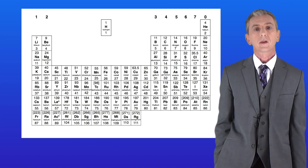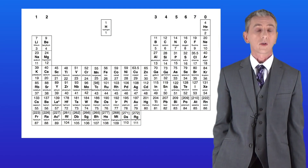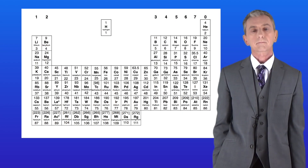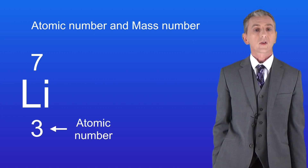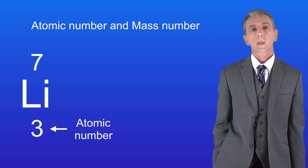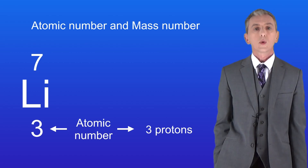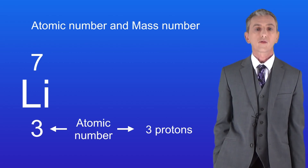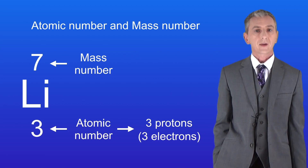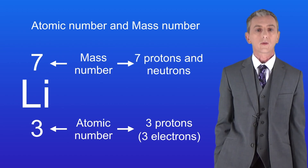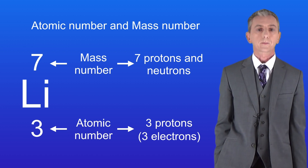The periodic table shows us the elements and we can use this to work out the numbers of protons, neutrons and electrons. You'll see that the symbol for each element has got two numbers. The smaller number is called the atomic number and this tells us the number of protons in atoms of that element. So we know that atoms of lithium have three protons. We've already seen that the number of electrons is the same as the number of protons, so atoms of lithium also have three electrons. The larger number is called the mass number and this tells us the total number of protons and neutrons added together. So atoms of lithium contain a total of seven protons and neutrons. To work out the number of neutrons we need to subtract the atomic number from the mass number. That tells us that atoms of lithium contain four neutrons.